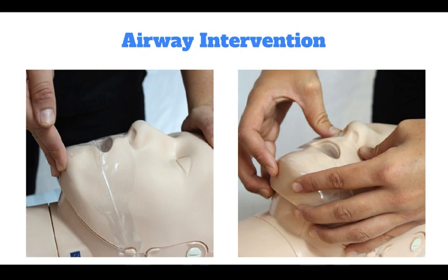In individuals with suspected neck injury, a jaw thrust alone is used to open the airway. While the standard practice for a suspected neck injury is to place a cervical collar, this should not be done in BLS or ACLS, as cervical collars can compress the airway and interfere with resuscitation efforts. The provider must ensure an open airway and is obligated to stabilize the head or ask for assistance while maintaining control of the airway.